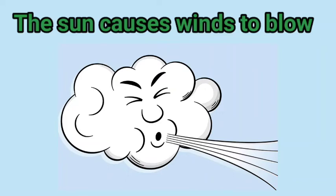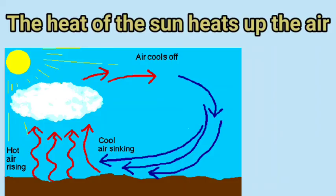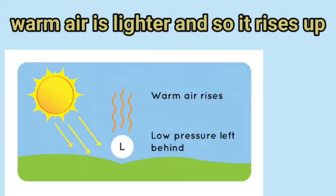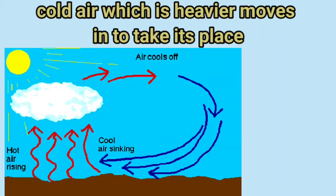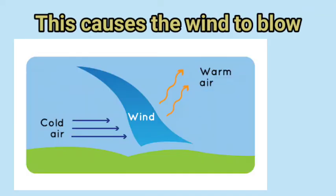The sun causes winds to blow. The movement of the wind is affected by the heat of the sun. The heat of the sun heats up the air. Warm air is lighter and so it rises up. Cold air, which is heavier, moves in to take its place. This causes the wind to blow.